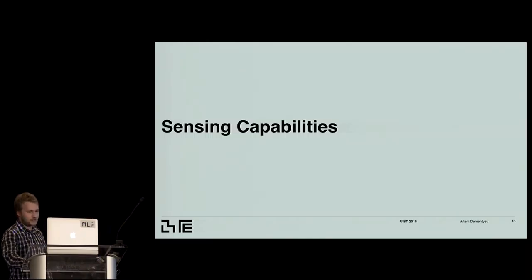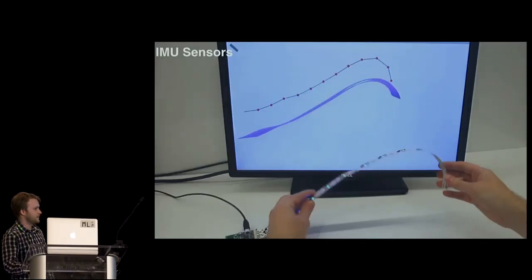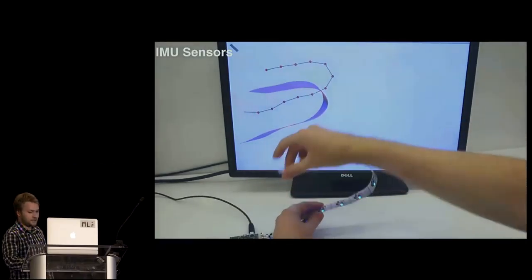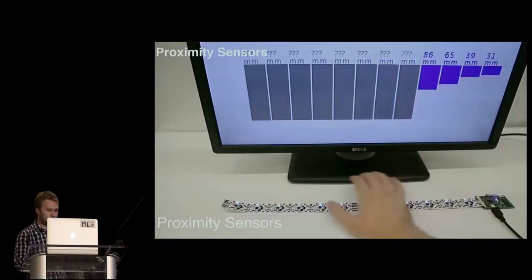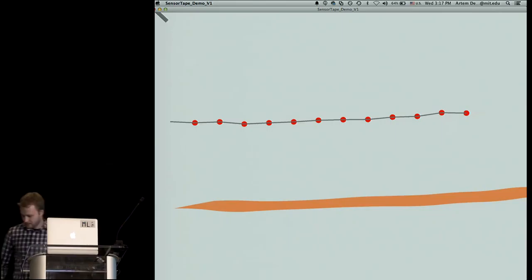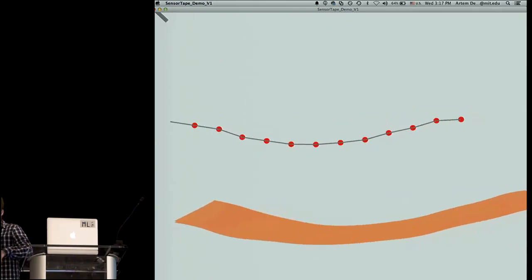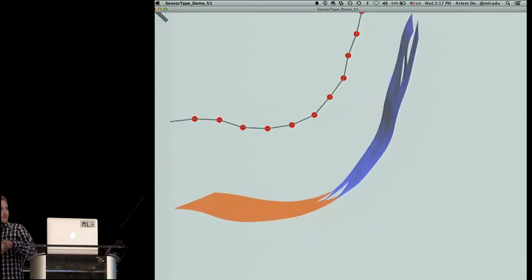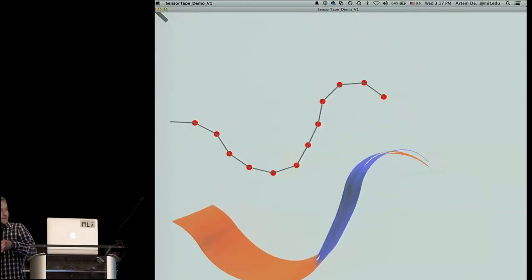So I'll just talk about the sensor capabilities, and I'll try to show the real-time demo. So the first thing we have is the IMU sensors for the deformation, and then we have the proximity sensors. So here I have a strip of the tape, 12 sensor nodes. As you can see here, you can sense the... I can make any shape.